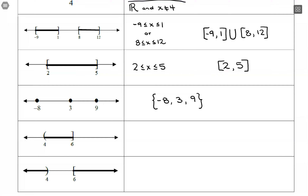This next one goes from 4 to 6. We're not including 4, but we are including 6. So the inequality is 4 < x ≤ 6. In interval notation, that's written with a parenthesis at 4 and a square bracket at 6: (4, 6].